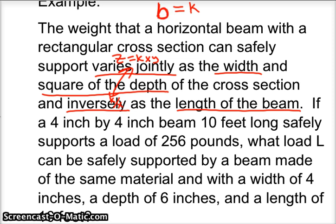So b equals k times your width and the square of your depth, so d squared. And inversely proportional, which just means to divide by L, which we'll call the length of the beam. And so there's how you combine the two formulas.